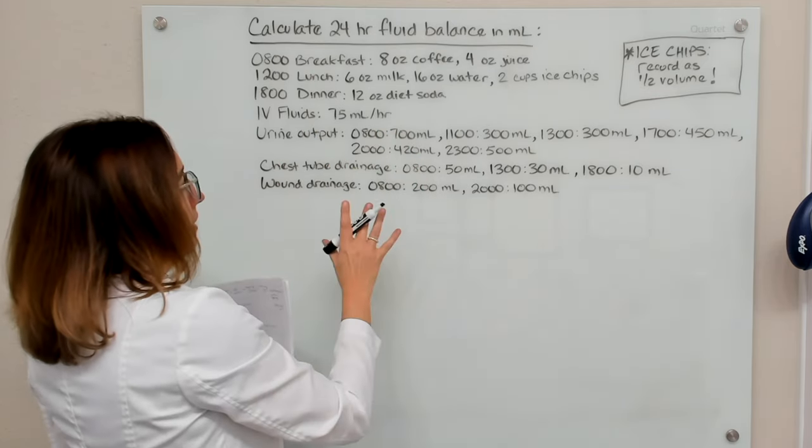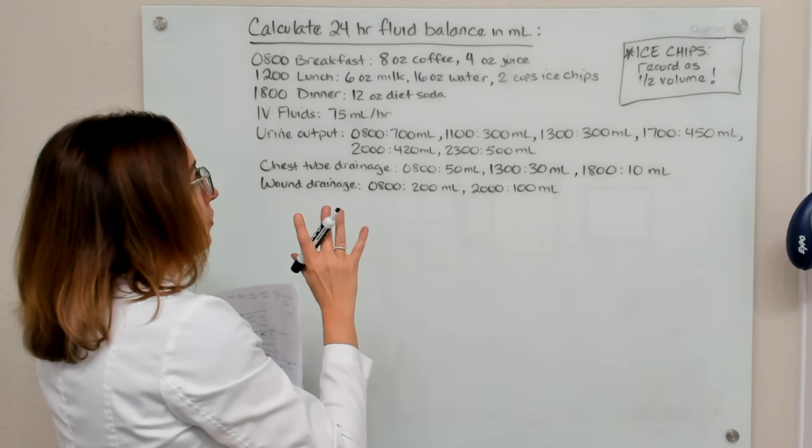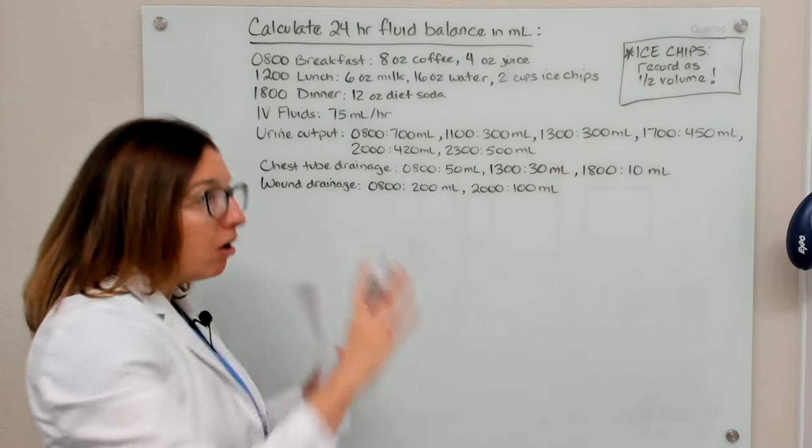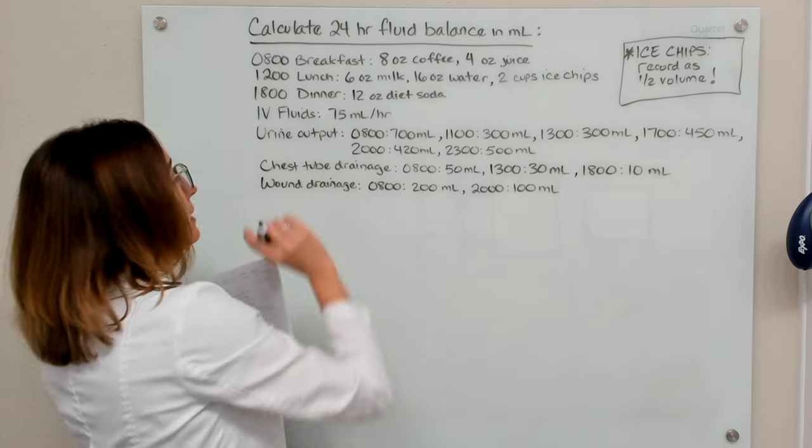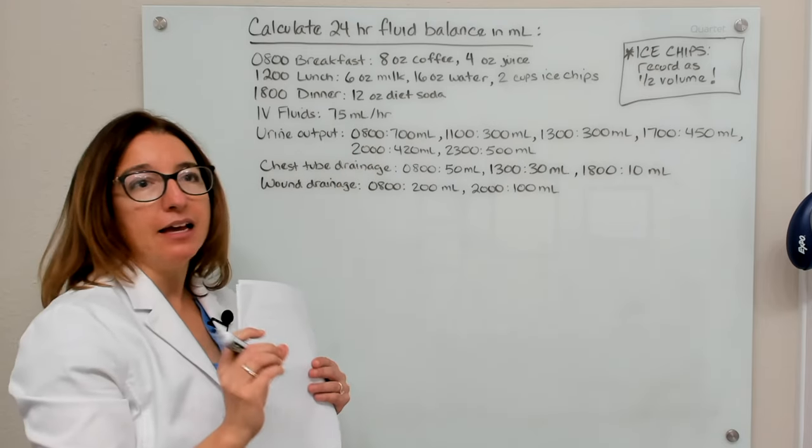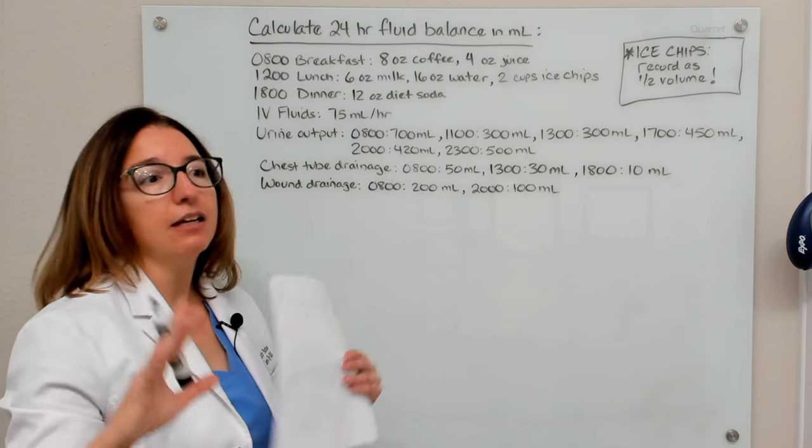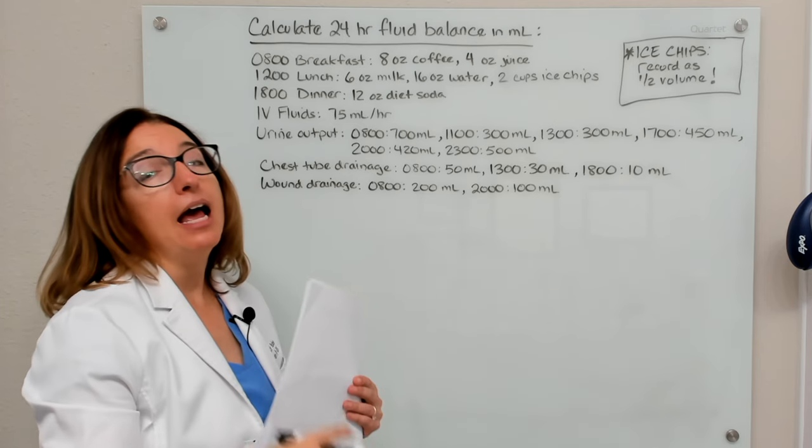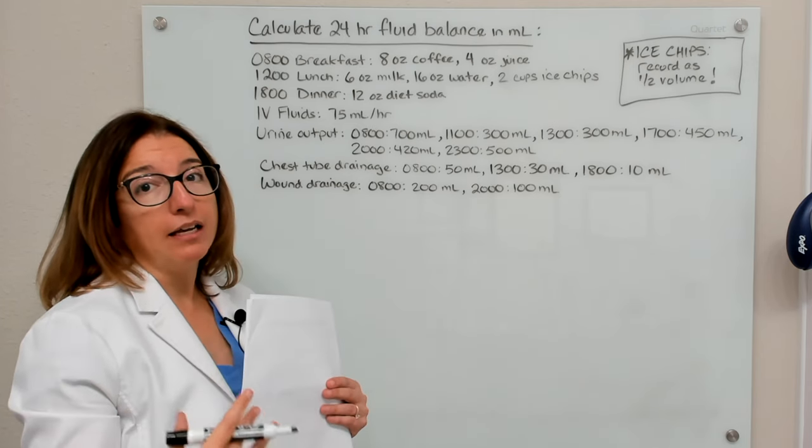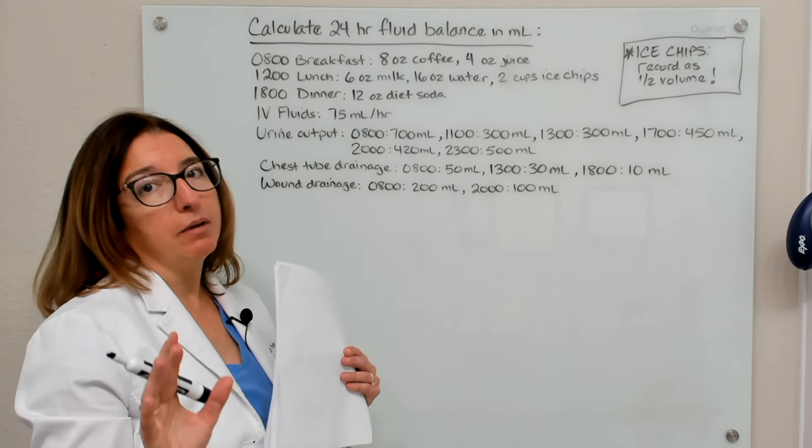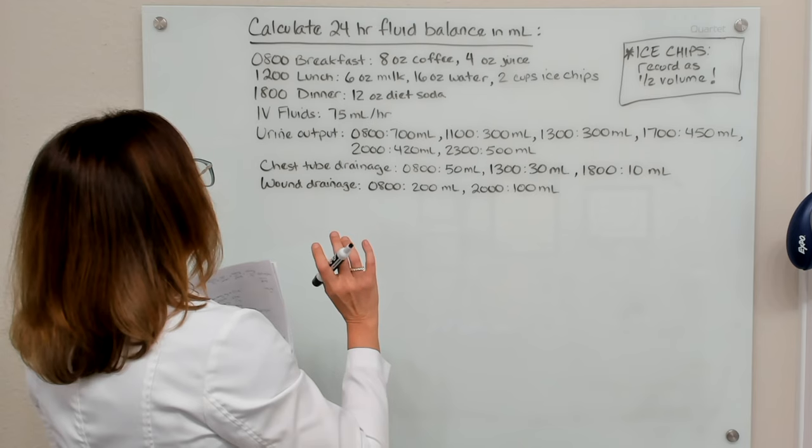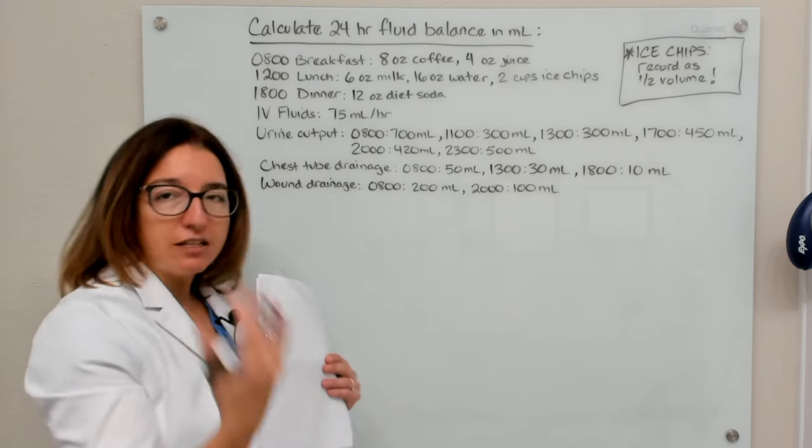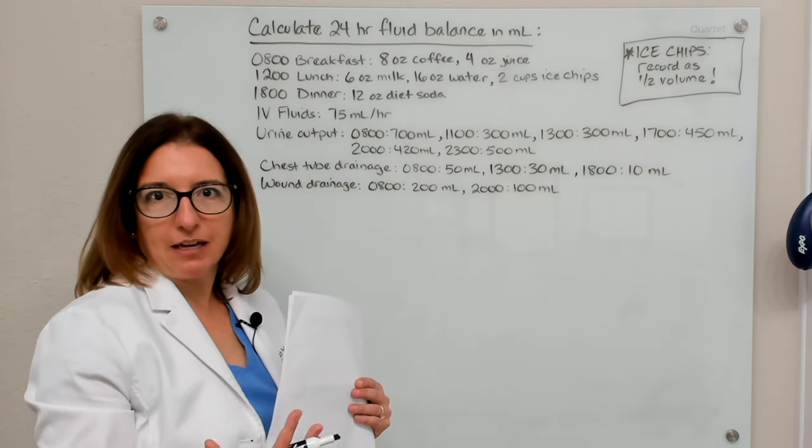So we are going to work through a fluid balance problem. When you do these types of problems, you want to make sure you are adding up all forms of intake. So that means oral intake, IV fluid intake, IV medication intake. And then when you are recording output, you want to make sure you record all forms of output. So this includes urine output, chest tube drainage, wound drainage, that type of thing.